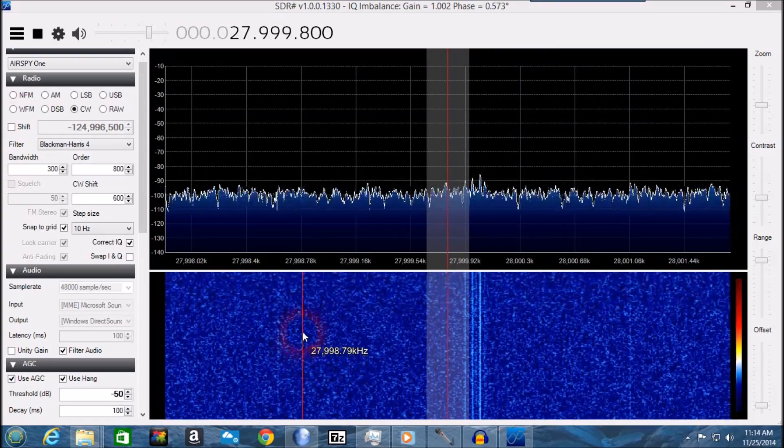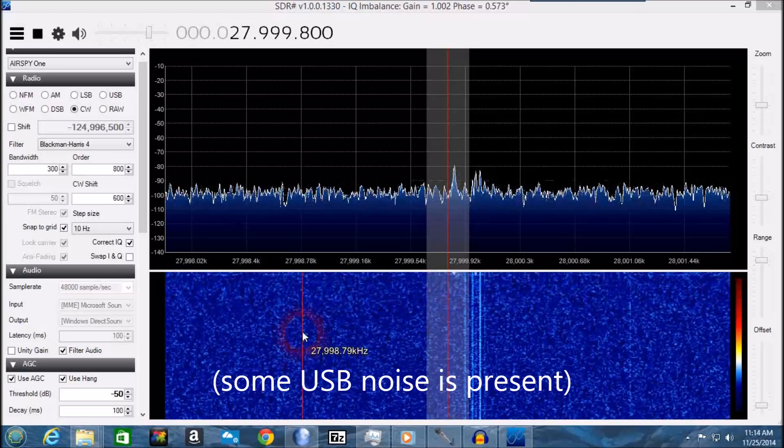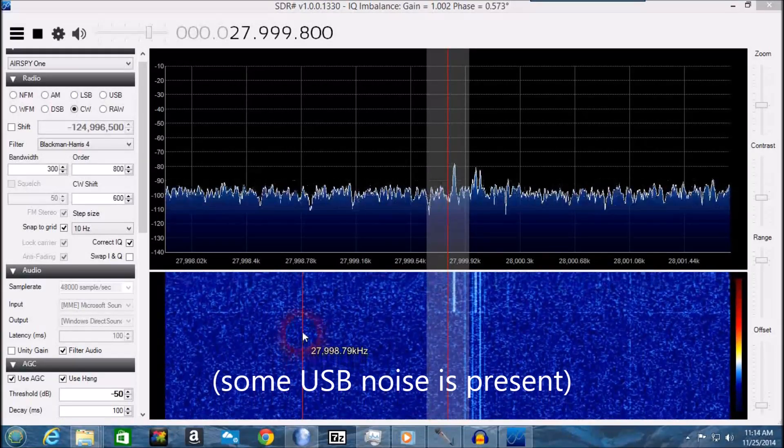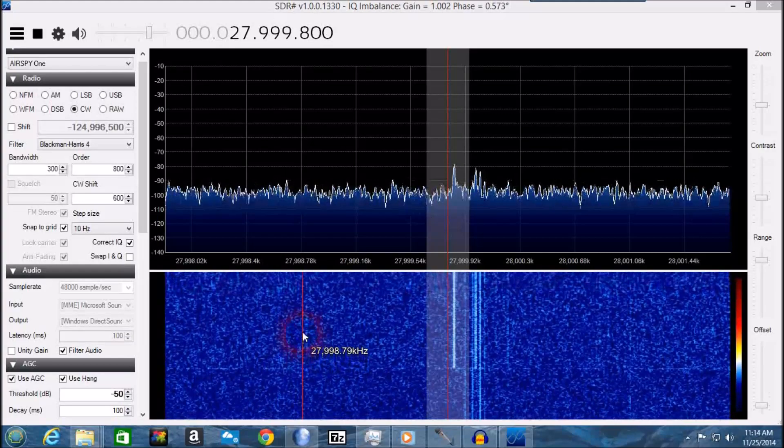Here's a quick look at that one-tenth microvolt signal through a 600 cycle CW filter in SDR sharp.